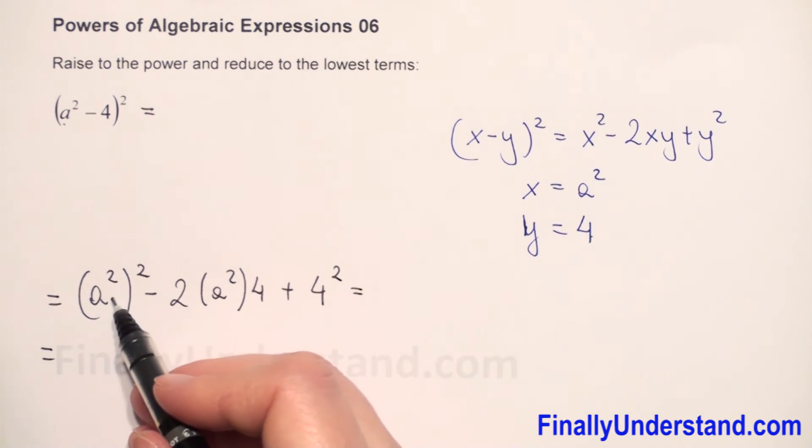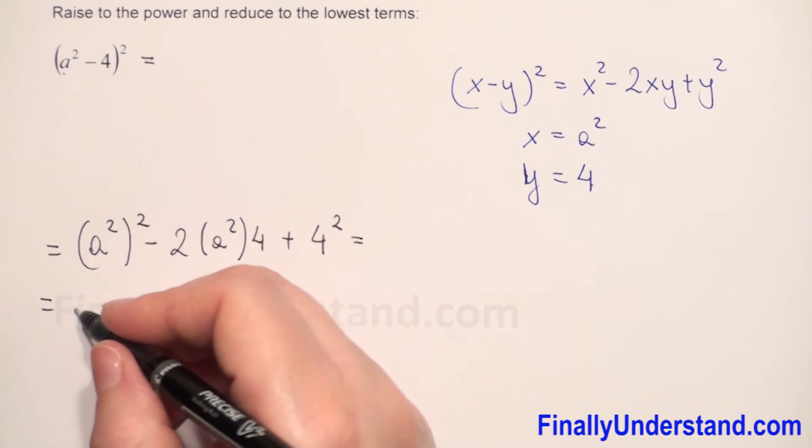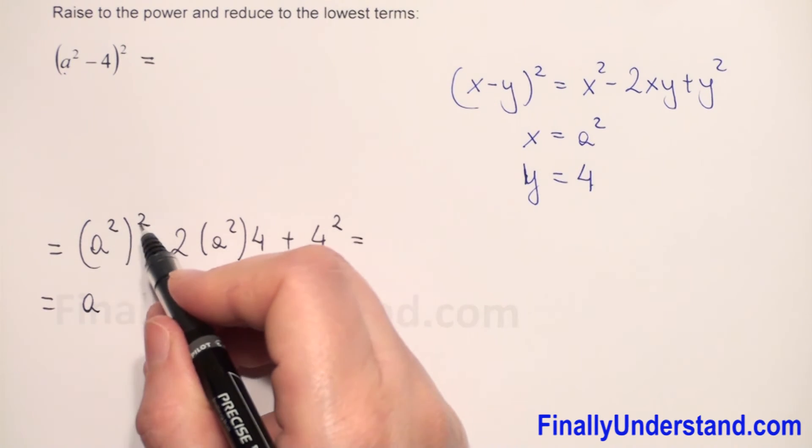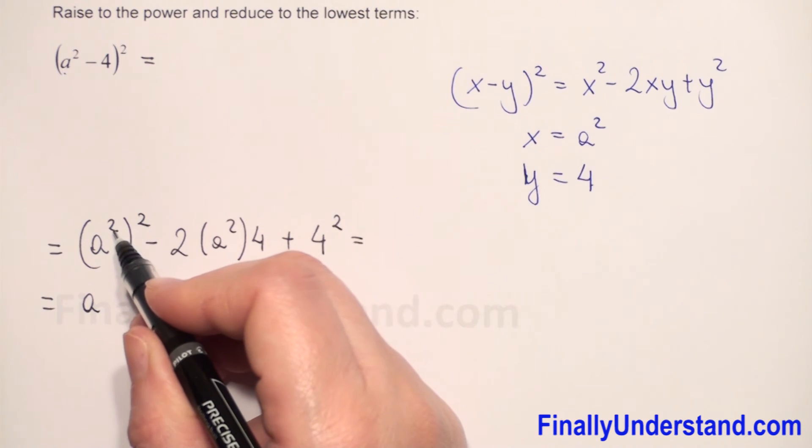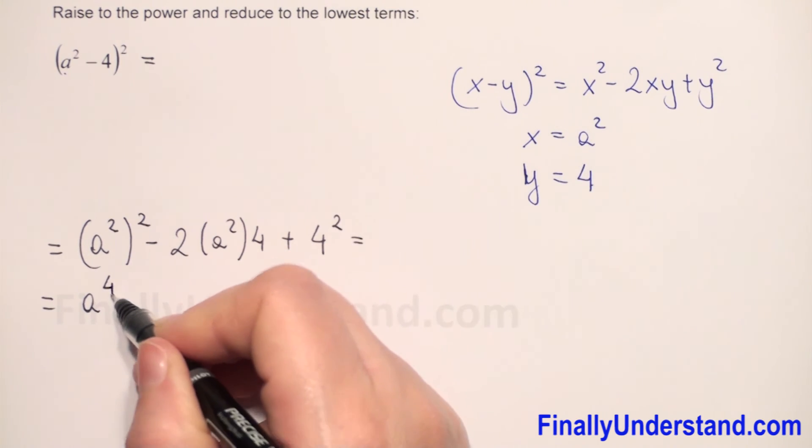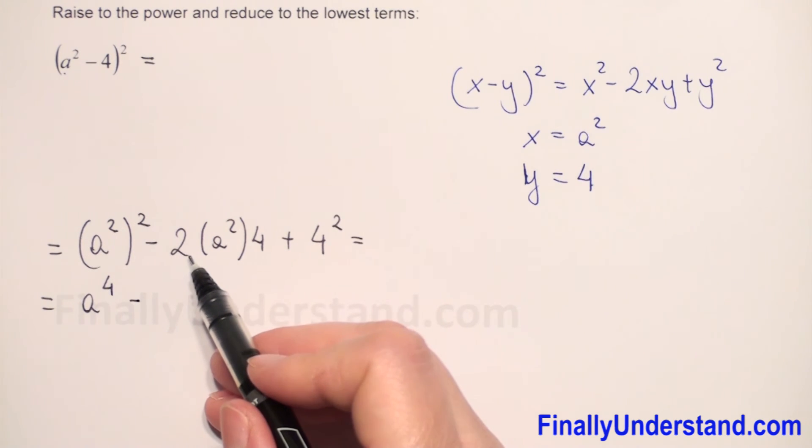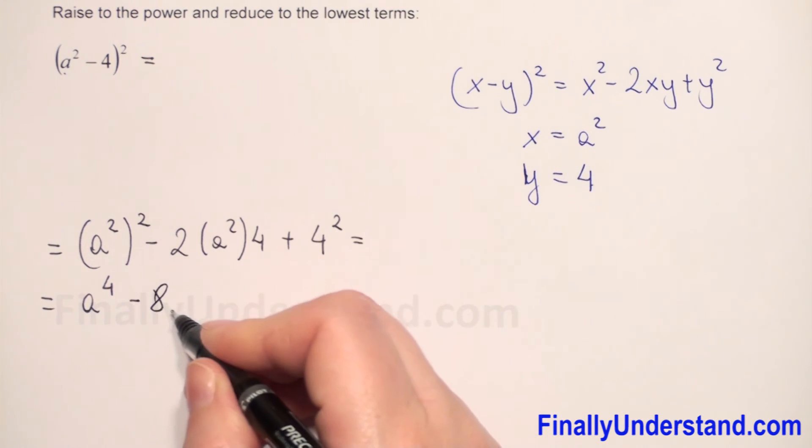So this is equal: we have power to power, so we copy the base and multiply exponents. 2 times 2 is 4. Minus, next we have 2 multiplying the numbers, 2 times 4 is 8.